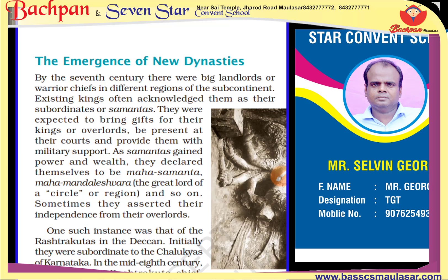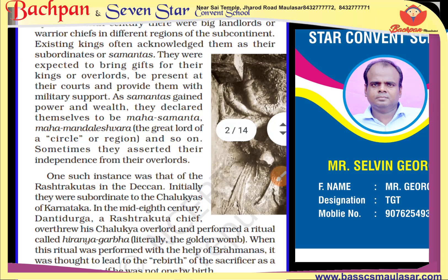Emergence of new dynasty — dynasty ka matlab toh maine aap logo ko pahle hi bata diya. Us zamane mein raja log ke bade bade zamindar hote the, ya warrior chiefs hote the, unke paas choti-moti sena hoti thi. Woh raja ke subordinates, yani samantas kehte the. Dheere dheere ye landlords aur taqatwar hone lage. Jaise jaise zyada taqatwar hone lage, inhone apne aap ko mahasamanta kehna shuru kar diya — ya us poore area ka samant hain. Aur jaise jaise powerful hone lage, to ye apne aap ko raja bhi kehlane lage.